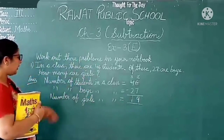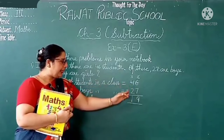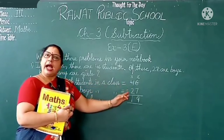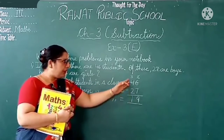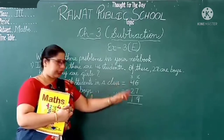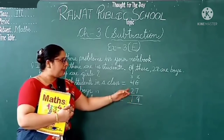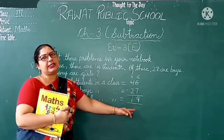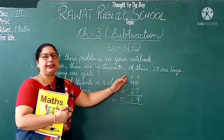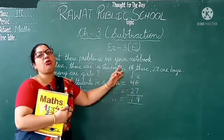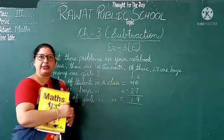Write down the answer: number of girls in a class is equal to 19. We subtract 27 from 46, the answer is 19. So 27 boys and 19 girls in the class. And 27 plus 19 is equal to total 46 students. I hope you understand, students.